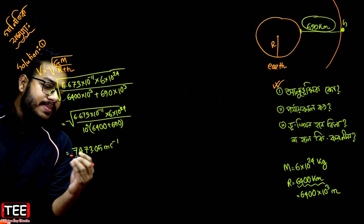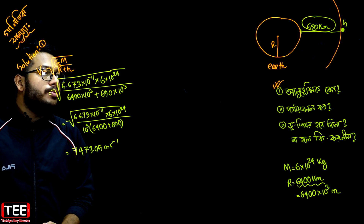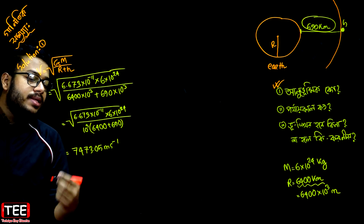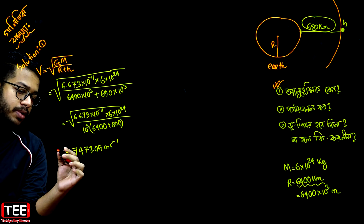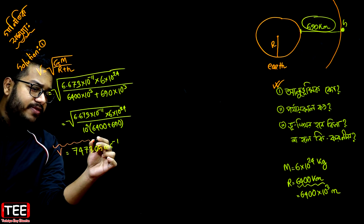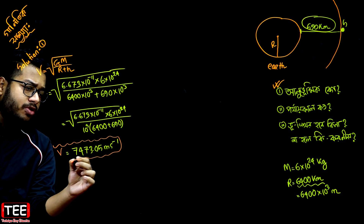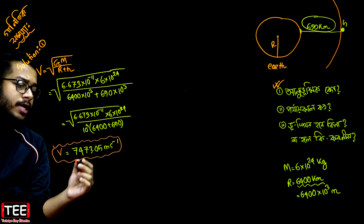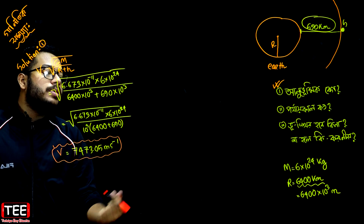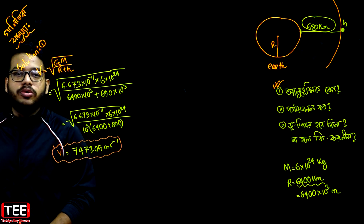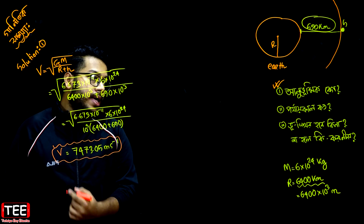So this is basically the satellite which is 690 km up. So V is equal to 7473.04 meters per second. This is why you should be able to convert this to the appropriate units.